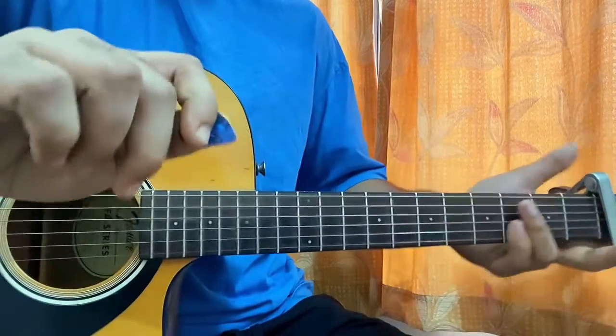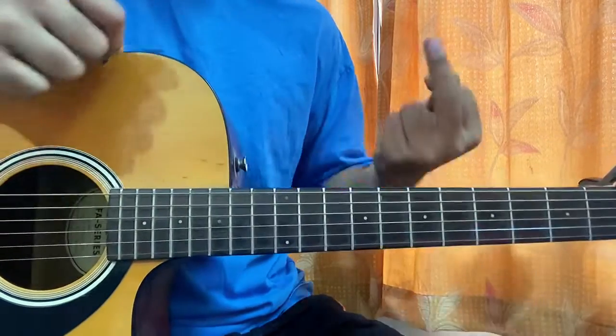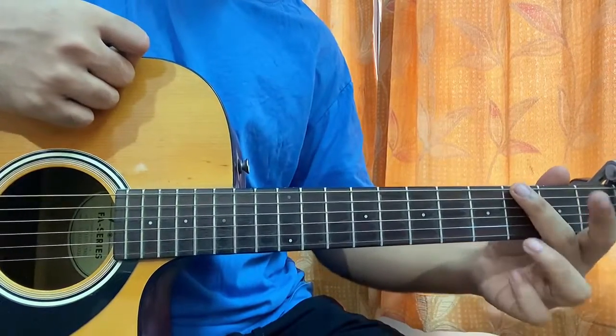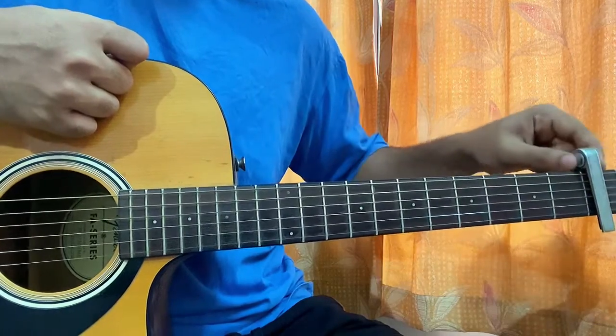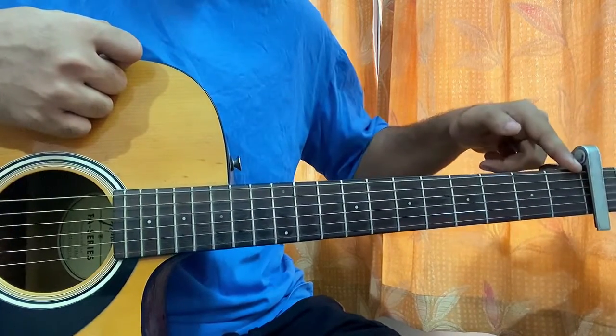Starting: capo will be on fret 1. Grab your plectrum. Take your middle finger, put it on the top string third fret. Now the third fret is relative to the capo which is over here, so this is fret 0, this is 1, this is 2.